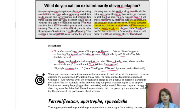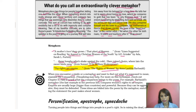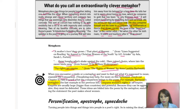So when you encounter a simile or a metaphor and you want to find out what it's supposed to mean, examine the comparison. Ask yourself what the comparison brings to the poem. For example, Barbauld's metaphor — 'Thy rights are empire,' from 'The Rights of Women' — compares women's rights to an empire. These are very different, seemingly dissimilar things: women's rights and an empire.